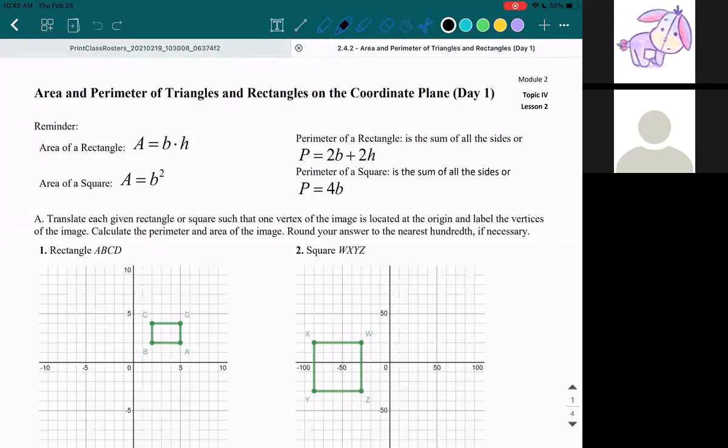And then when you're doing a perimeter, you're literally just adding up all the sides. So in this case, for a rectangle, there are two pairs of equal sides. The base on the bottom is the same as the length of the line on the top. So that's why it's 2b plus 2h.